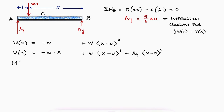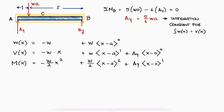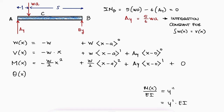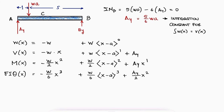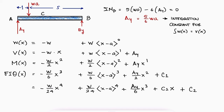The function for the moment m(x) is the integral of v(x) plus integration constants, but since there are no external couples or reaction moments, those constants are zero. With M over EI being the second derivative of y, the slope function theta(x) times EI is the integral of m(x). Integrating all terms and simplifying, we add the integration constant C1 for theta(x). Integrating one final time and adding C2 gives the expression for y times EI.